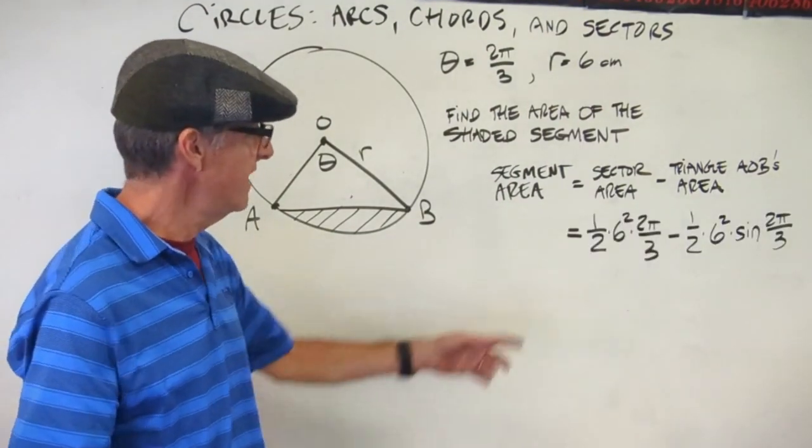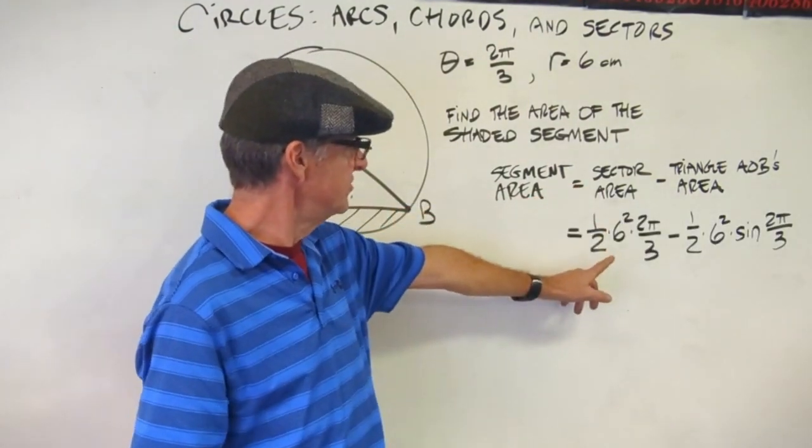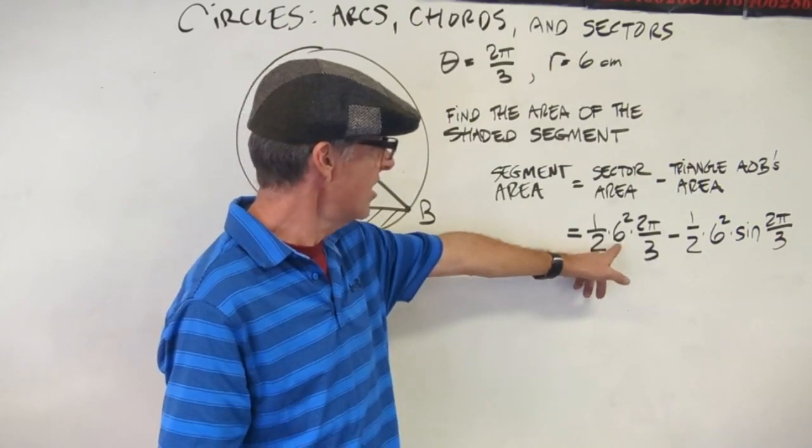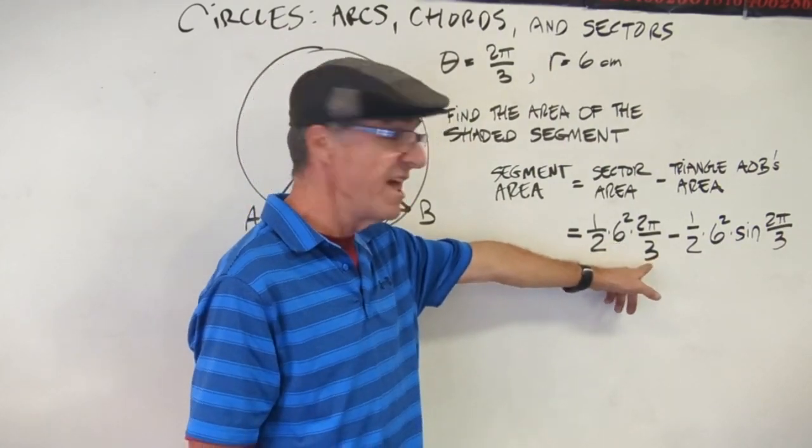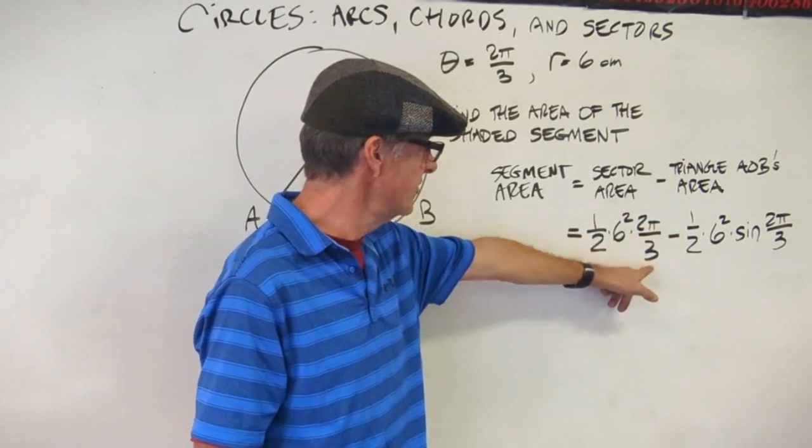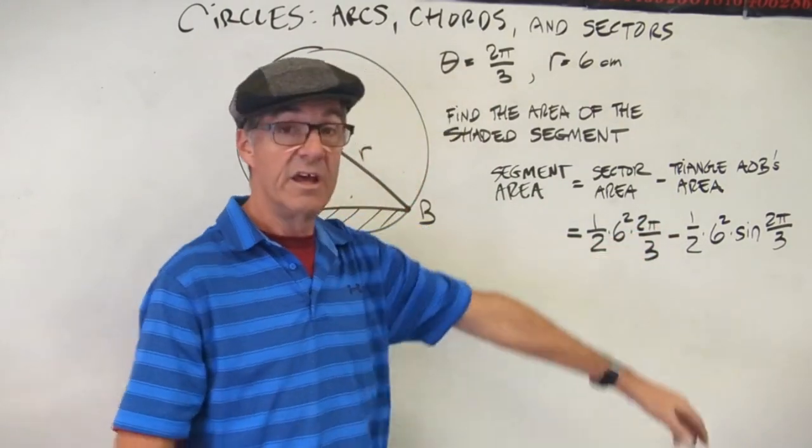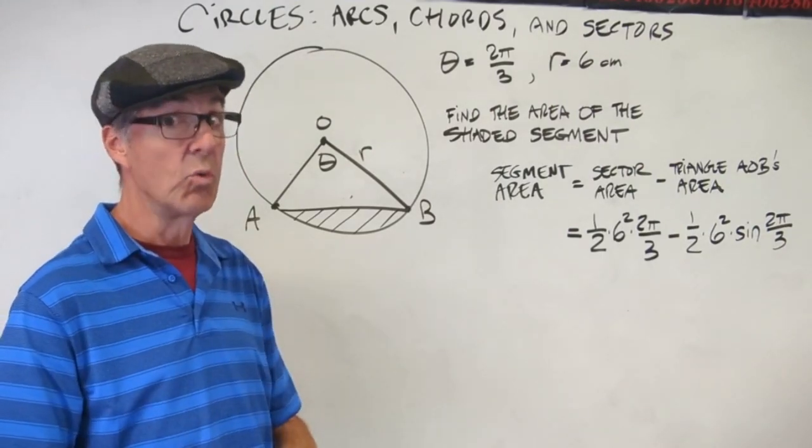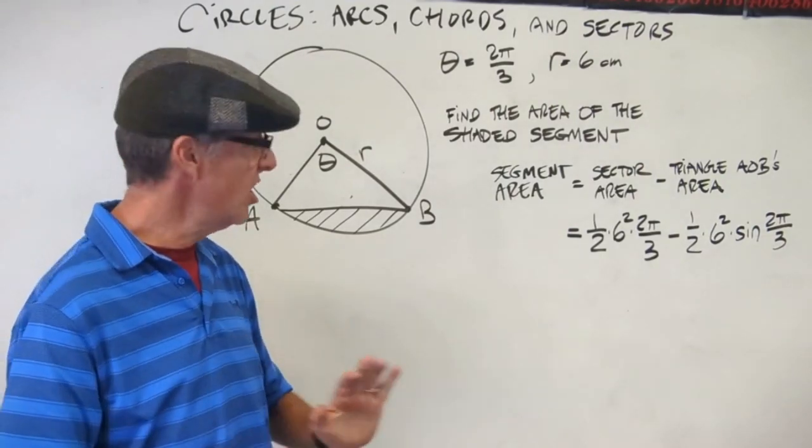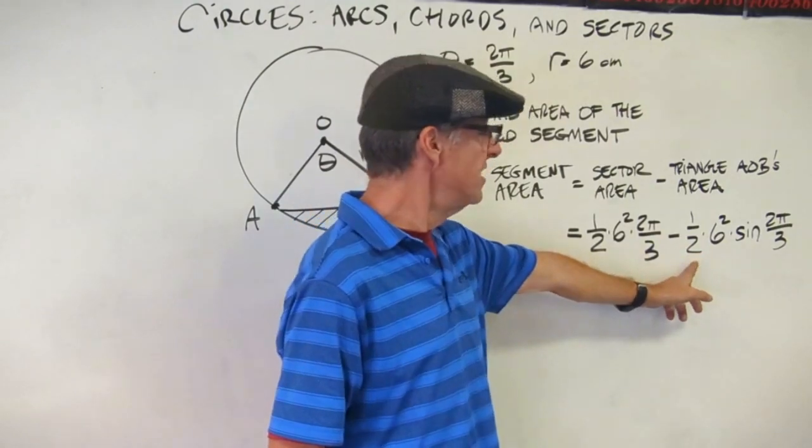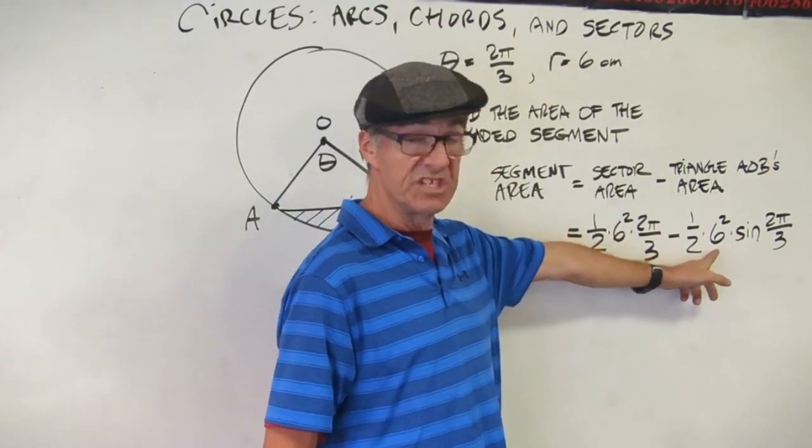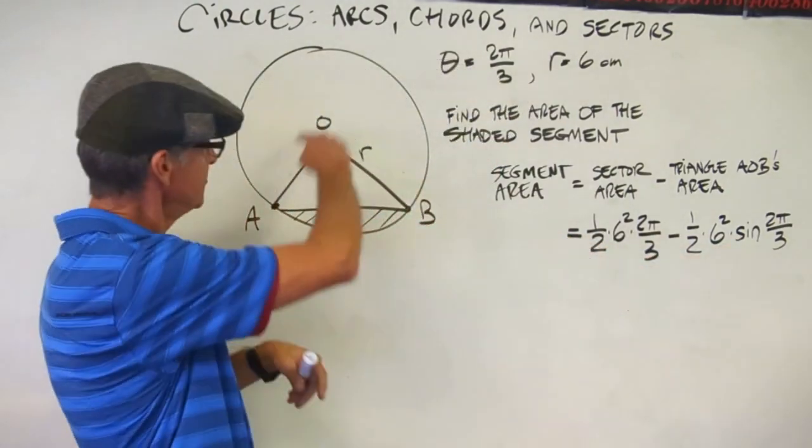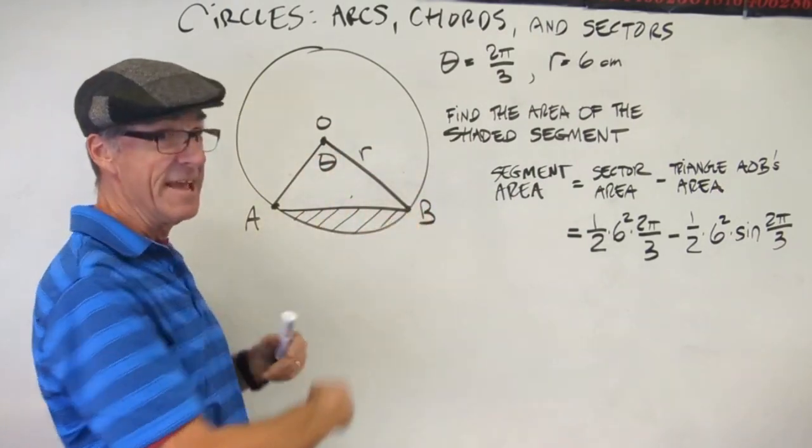I wrote out the next step. I have my sector area, which is just one-half times r squared times theta in radians, so that's 2π over 3. That's my sector area. Now, I went back to the last chapter for the area formula for a triangle with sine. As you recall, that is one-half times one side times the other side, which in this case, in this triangle, these two sides are the same. They are 6. So that's 6 times 6 or 6 squared times the sine of the angle between them.